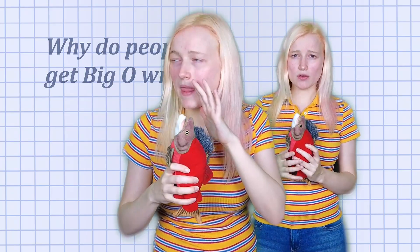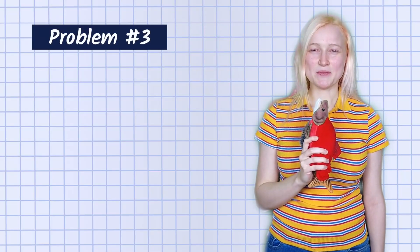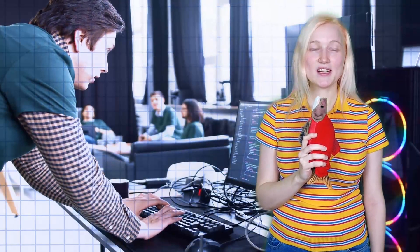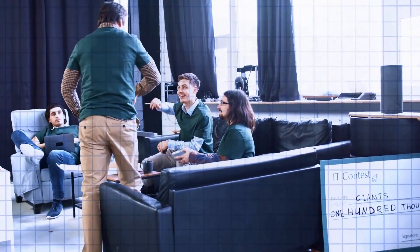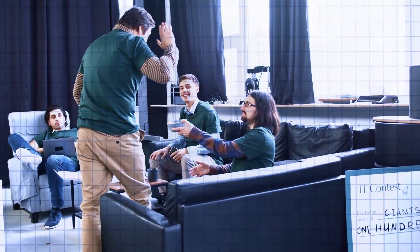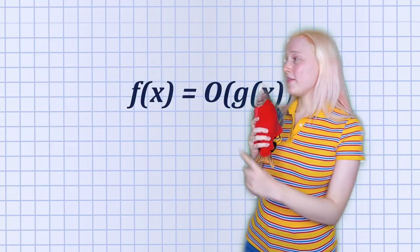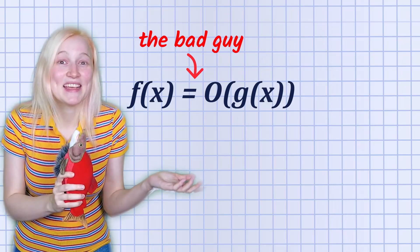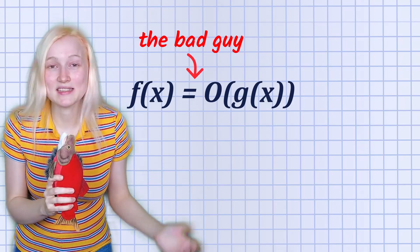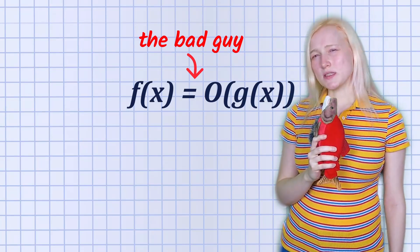So why do so many people get this wrong? We tricked them. We tricked them with the notation, because theoretical computer scientists don't care about anyone except other theoretical computer scientists. They don't mean to — they just forgot there are other people. This equal sign here is the offender. It makes no sense; it looks so harmless.